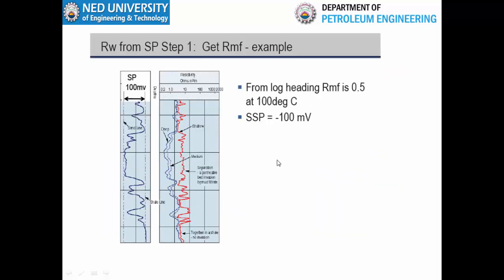For example, a SP log has been provided. From the shale baseline to the sand baseline the difference is 100 millivolts, so the SSP value is 100 mV. The shale baseline is drawn against the SP response of the shale zone by comparing with other logs such as the gamma ray log and resistivity log. Any deviation from the shale baseline indicates a permeable zone, and the maximum deflection against clean sandstone is the SSP.